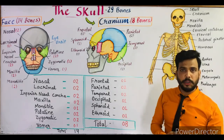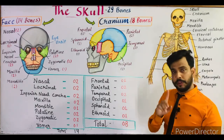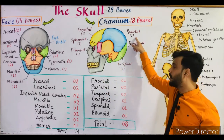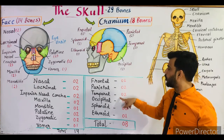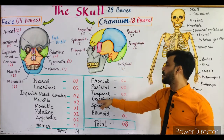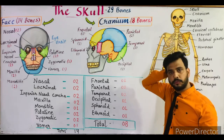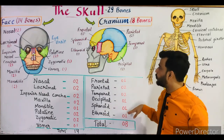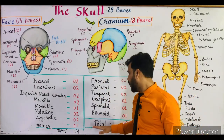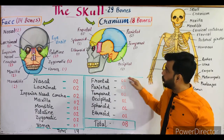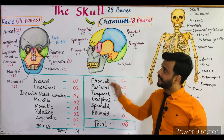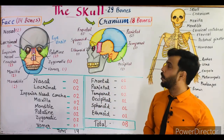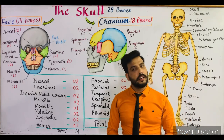Let me repeat all the cranial bone names: frontal bone — 1; parietal bone — 2; temporal bone — 2; occipital bone — 1; sphenoid bone — 1; ethmoid bone — 1. That gives a total of 8 cranial bones. Combined with the 14 facial bones, I hope all the names of the skull bones — both cranial and facial — are very clear to you.